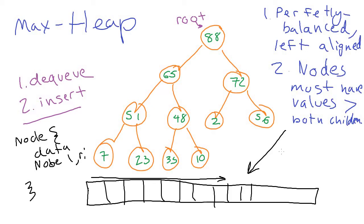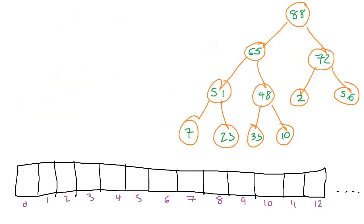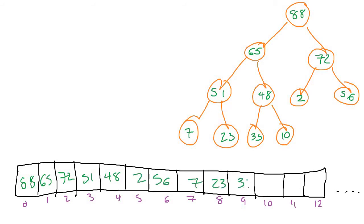So how do we store a binary tree in an array and figure out what's the child of what and who's the parent? We start by putting the root into slot zero, then read left to right: both children of root go into the next two slots. So 65 goes at index 1, 72 at index 2, then 51, 48, 2, 56, 7, 23, 35, and 10. That's why having the heap be perfectly balanced and left aligned makes sense — we're not wasting extra space.